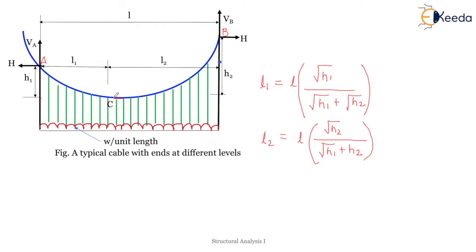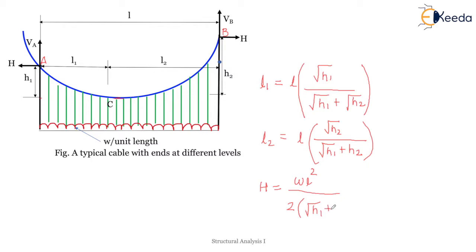To find the reactions Va and Vb, we calculate moments about C. We take summation of forces in the Y direction and moment about any point — the usual procedure from strength of materials. When we substitute Va and Vb into H, we arrive at the formulation: H = wL² / [2 × (√h1 + √h2)²].